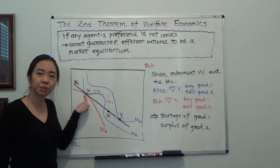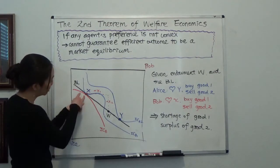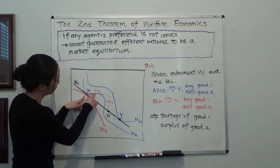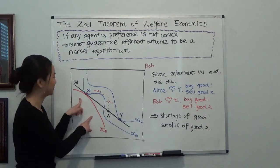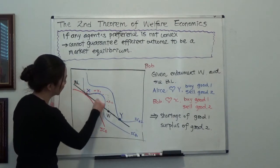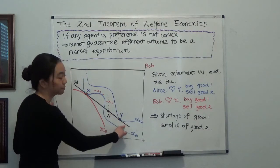So x is efficient, and we can see the tangent of the indifference curve of Alice, and also Bob. So here we draw a tangent line, and let this be the budget line.